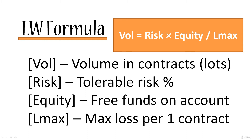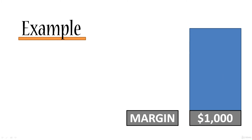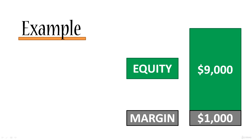Now if you put all that together you'll get the volume. Let's have a look at an example to better understand. On the right we've got a balance of $10,000. Let's assume we already have an open position and the margin on that position is $1,000. This leaves us with equity of $9,000.